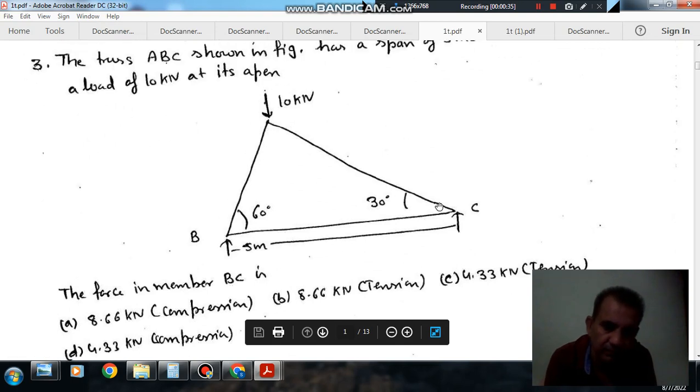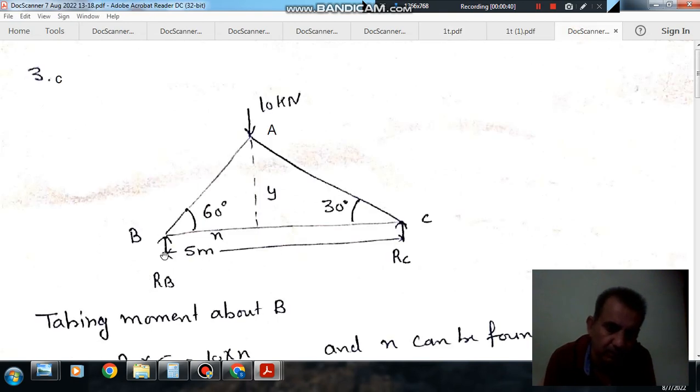This is the truss shown, and here normal reactions are at B and C, RB and RC, and this is your 10 kN load. And this angle is 60°, this is 30°, and this dimension is your y and this dimension is your x.